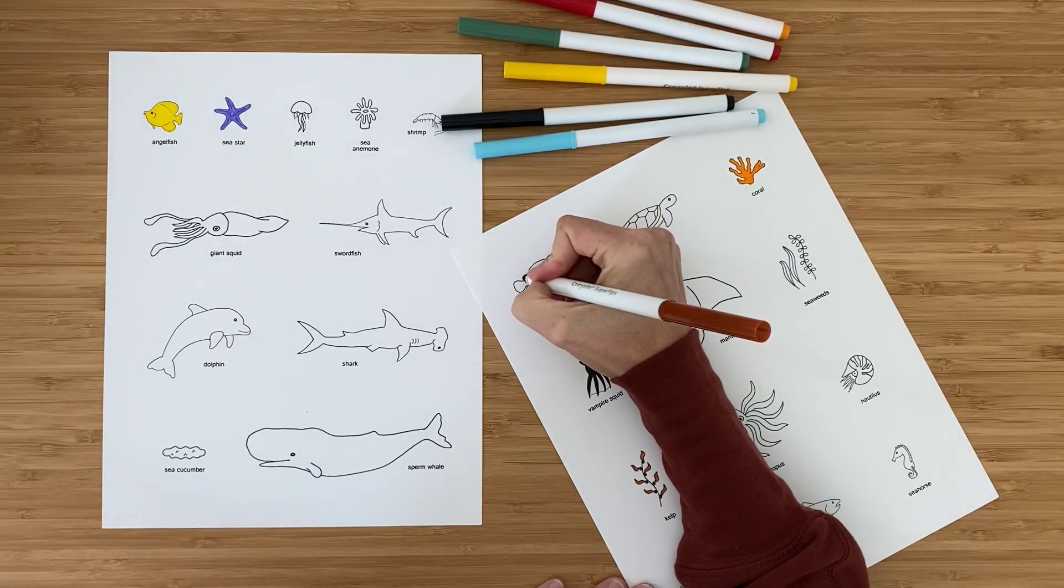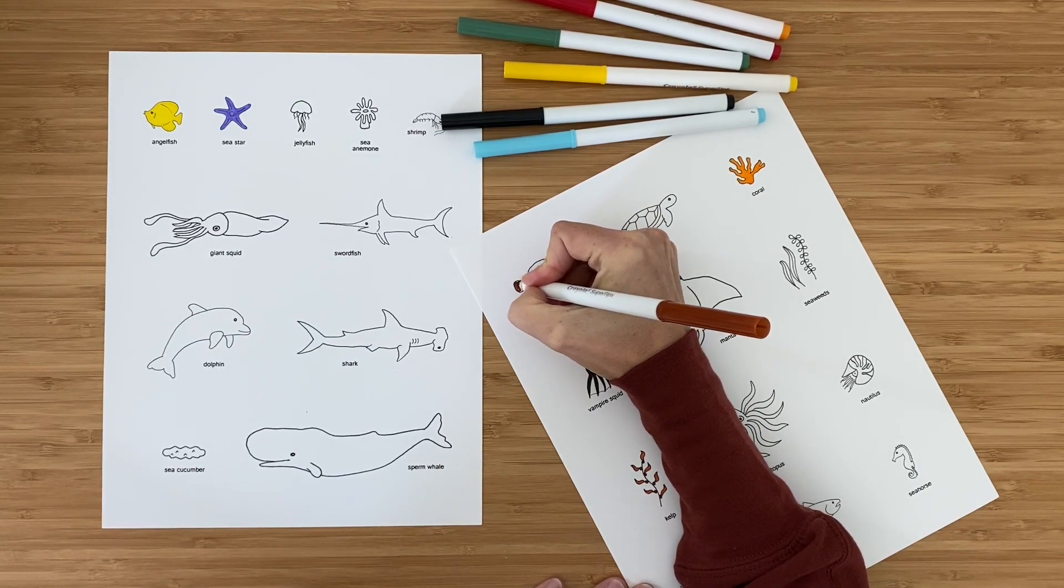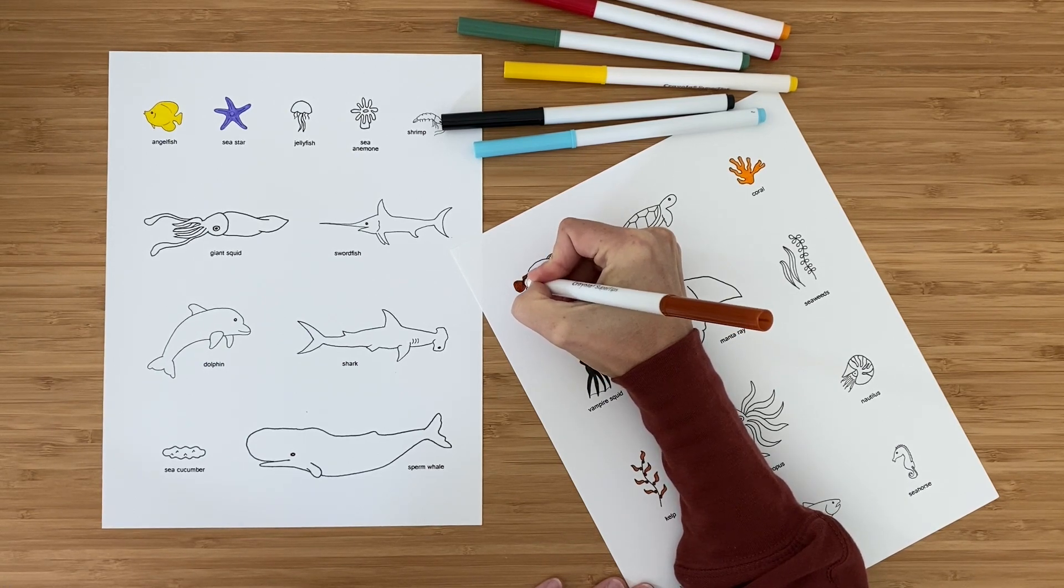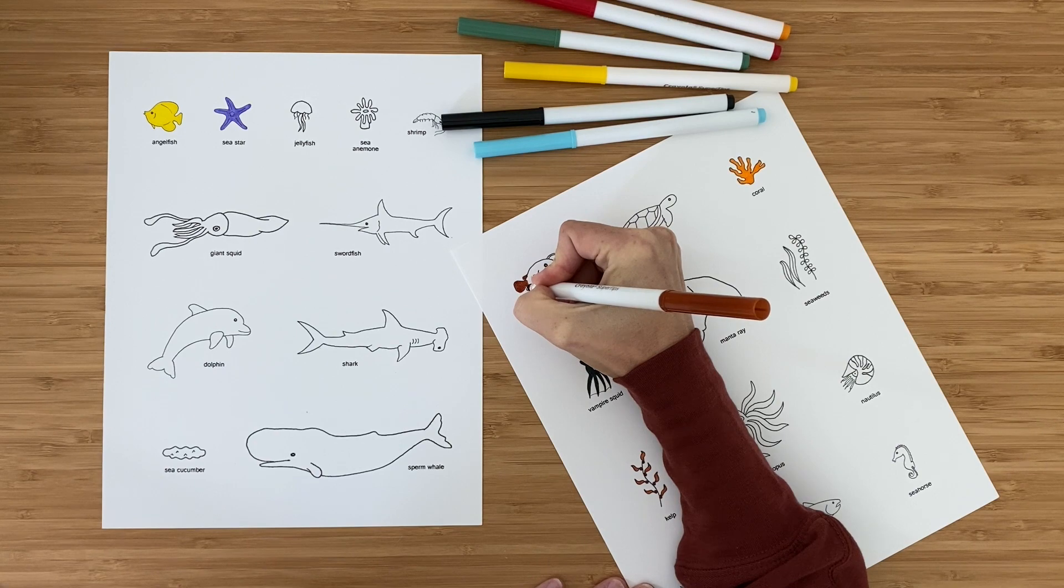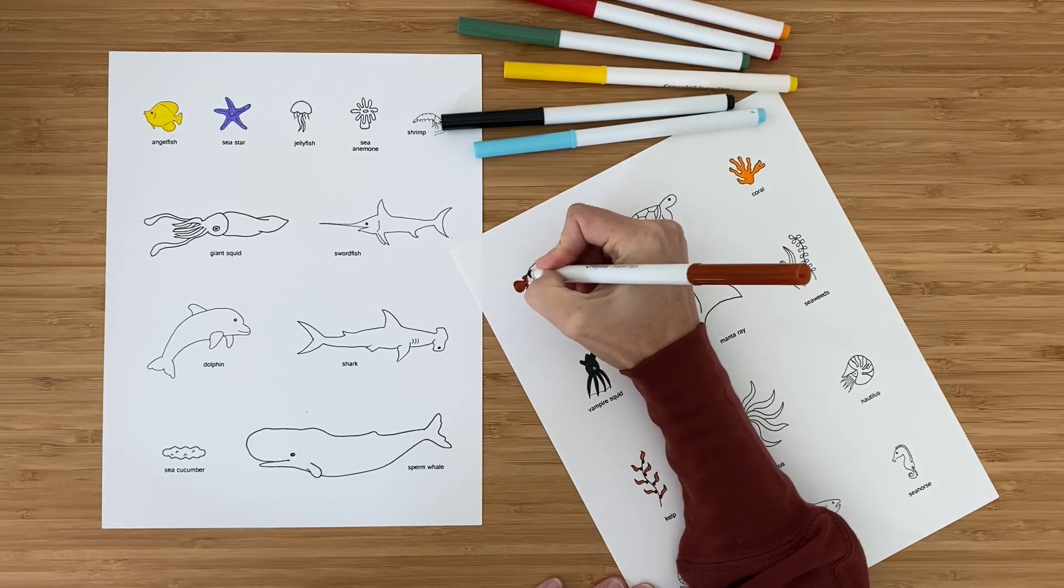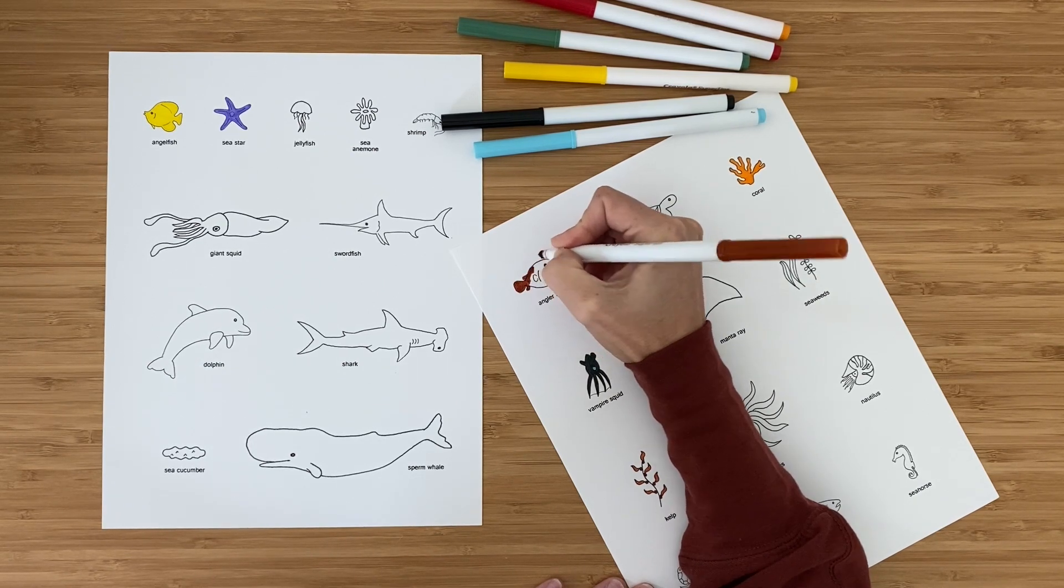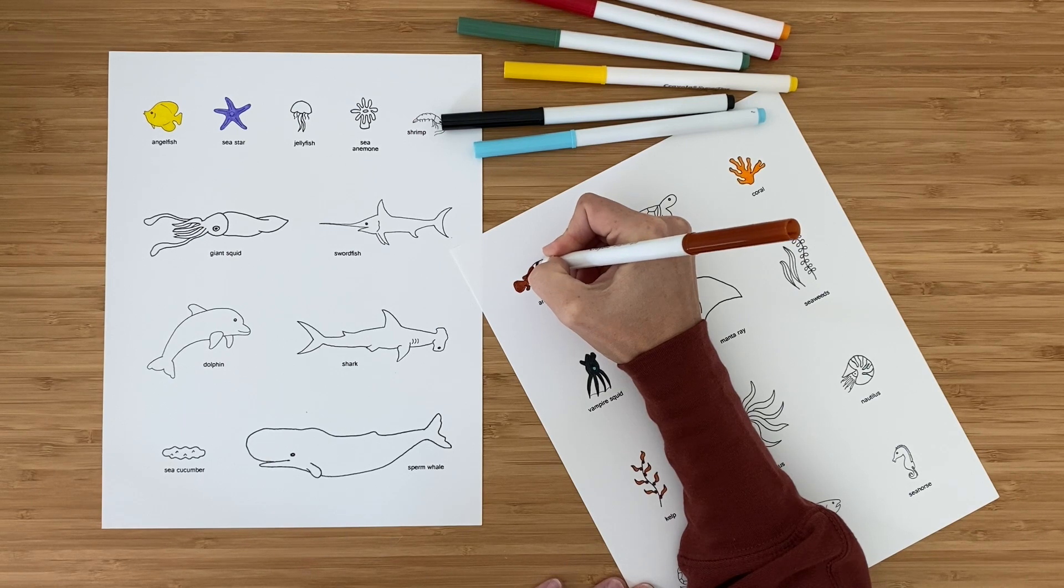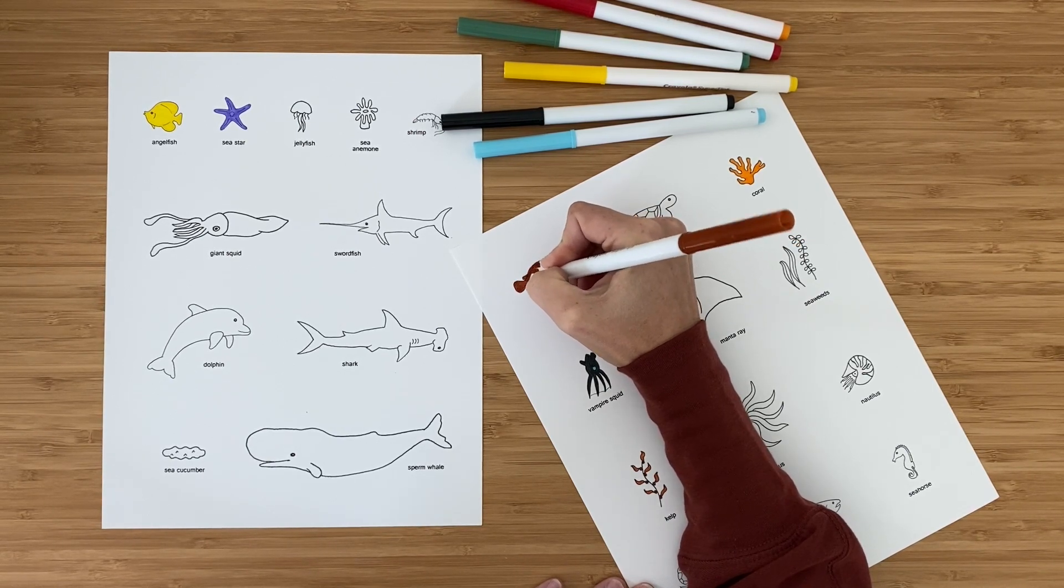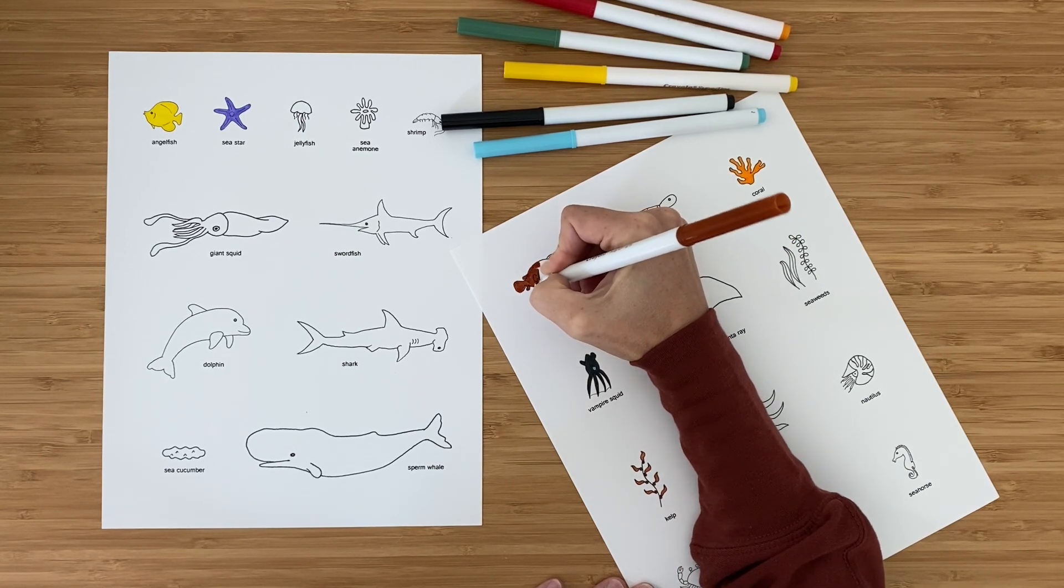Now it's time to color the sea life. You may want to have children color them true to colors that they might have found in their research, or you can just let them go to town and color however they would like. The creatures are a little bit small just because they need to be able to fit on that page. So if you find that they're having trouble staying in the lines, don't worry about it.